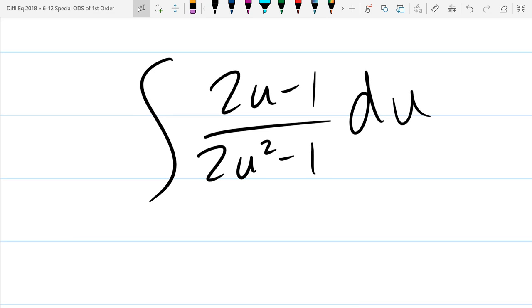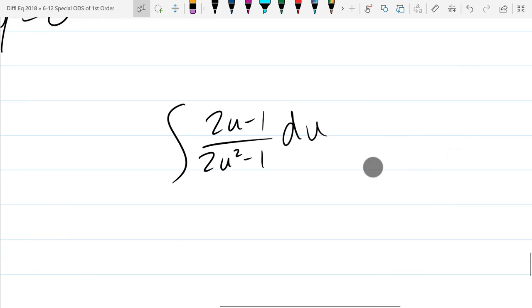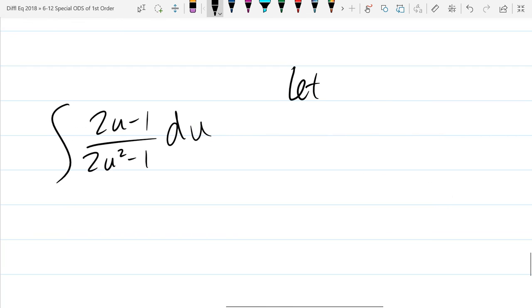So we could try u sub, we can't use u, so let's call it a w sub. What would be a reasonable choice for w? Two u squared minus one. And what does it make dw? Four u, four u du.